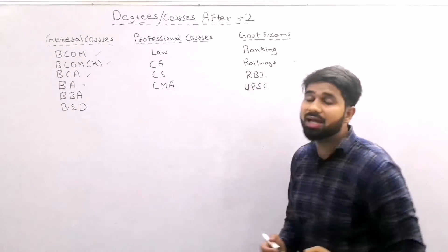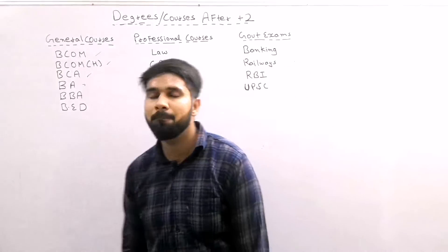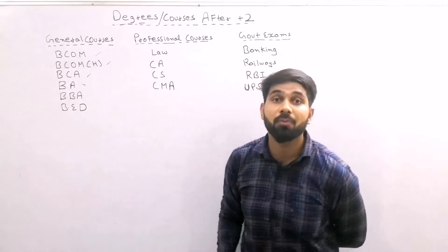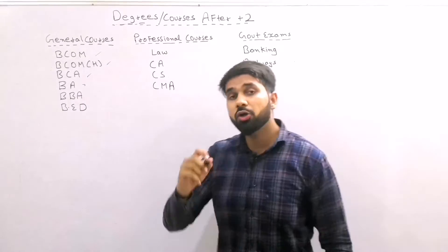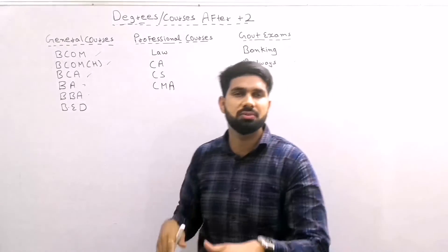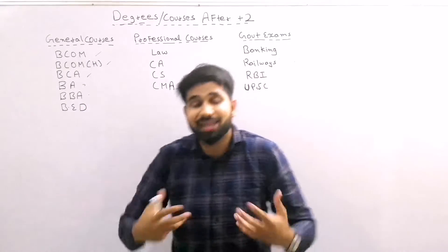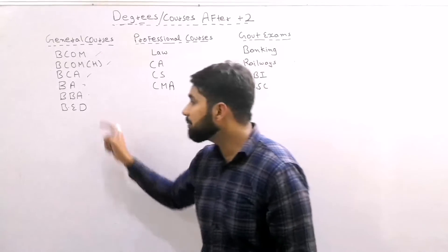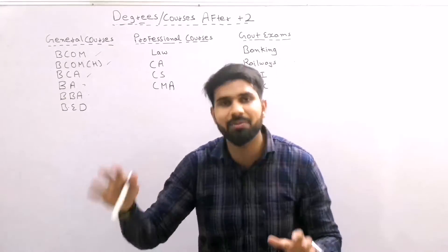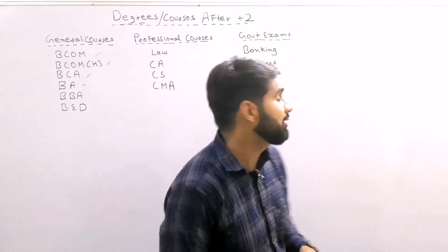Moving on, BCA — Bachelor of Computer Application — is for kids who have interest in computers. Next is BA — Bachelor of Arts. In our country BA is often considered for average students, but I will clarify that BA is also a champion choice. Then we have BBA — Bachelor of Business Administration — related to professionalism, preferred by those planning to do an MBA. After that, B.Ed — Bachelor of Education — is related to the teaching line, which I will explain properly.